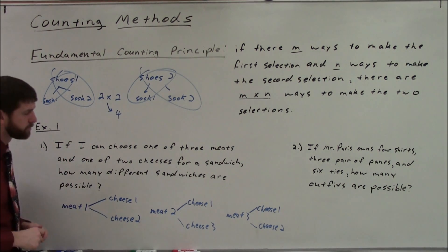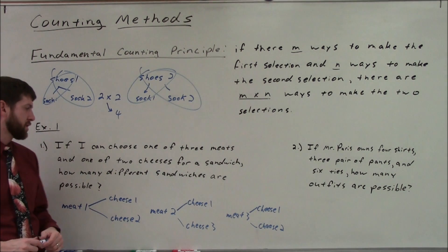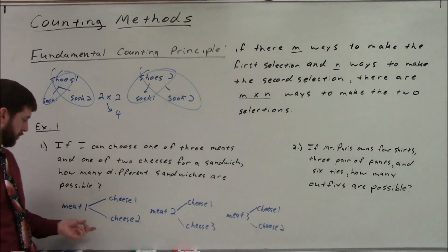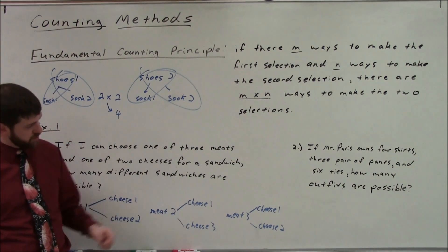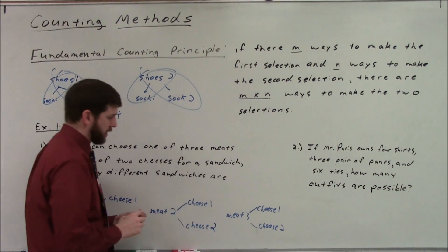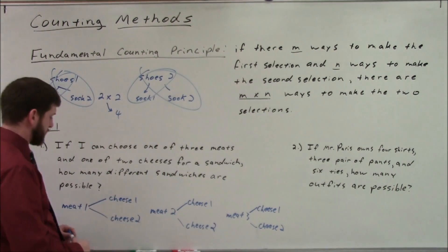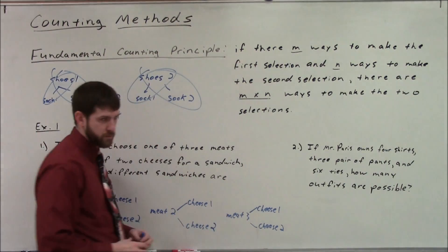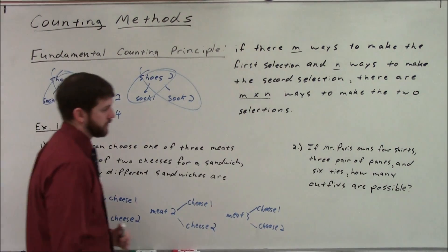So here's another example: if you can choose one of three meats and one of two cheeses for a sandwich, how many different sandwiches are possible? Meat one could go with cheese one or cheese two, meat two could go with cheese one or cheese two, and meat three could go with cheese one or cheese two — that's a total of six possible sandwiches.